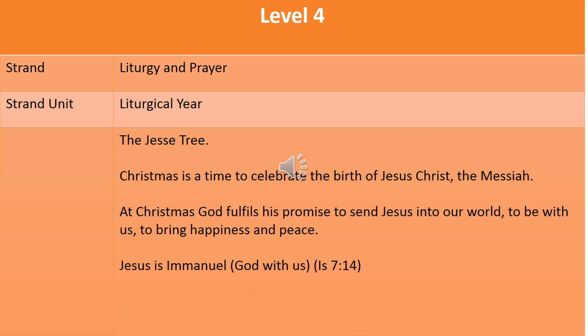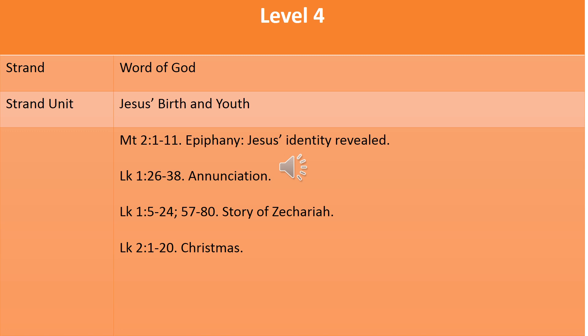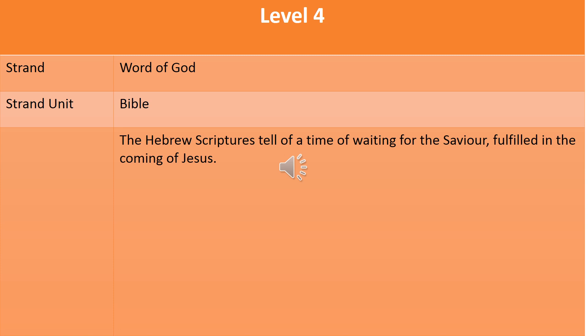Within the strand of Liturgy and Prayer and the strand unit of Liturgical Year, the children at senior class level are introduced to the Jesse tree, on which symbols of the family tree of Jesus are placed. Moving into the strand of Word of God, we see further pieces of scripture in terms of Jesus' birth and youth from Matthew's gospel — the Epiphany — and Luke's gospel. They encounter the story of Zechariah, who was John the Baptist's father. They also learn how the coming of Jesus was the fulfilment of Hebrew scriptures, where the people of God were waiting for a saviour.